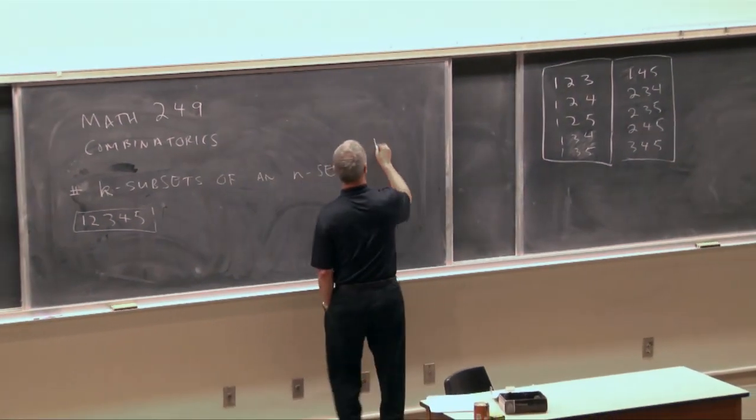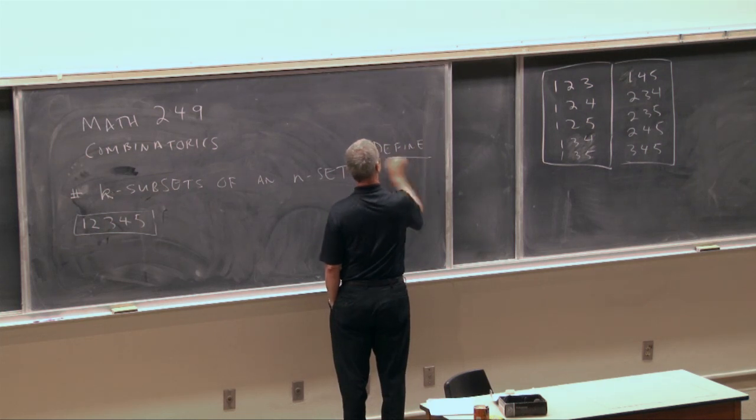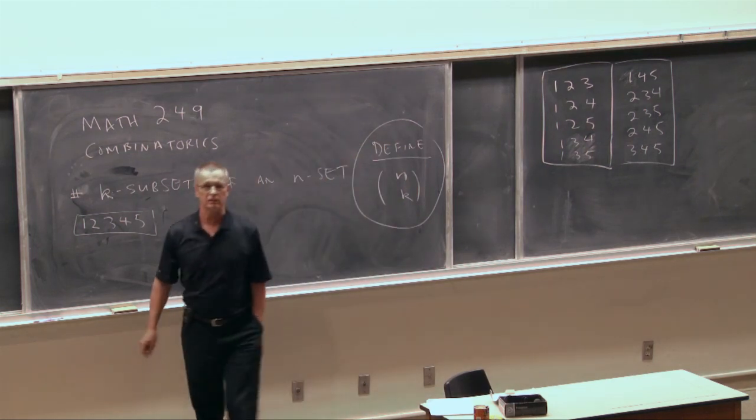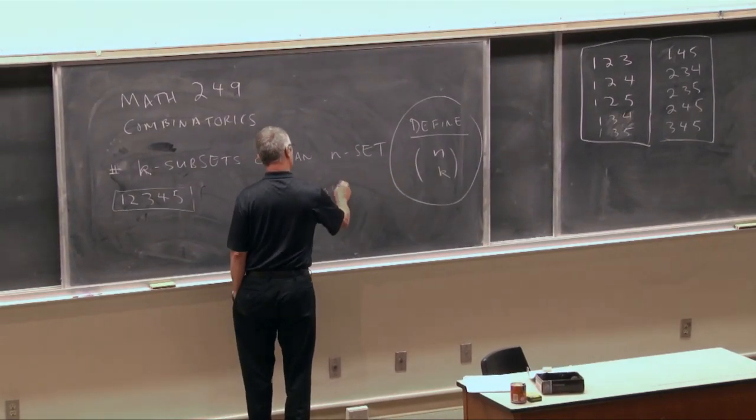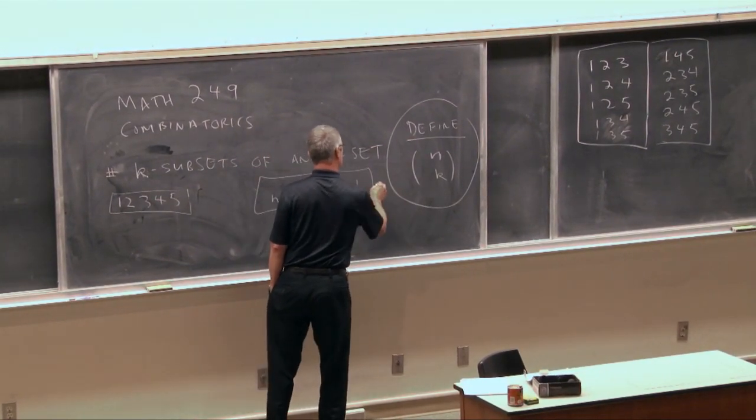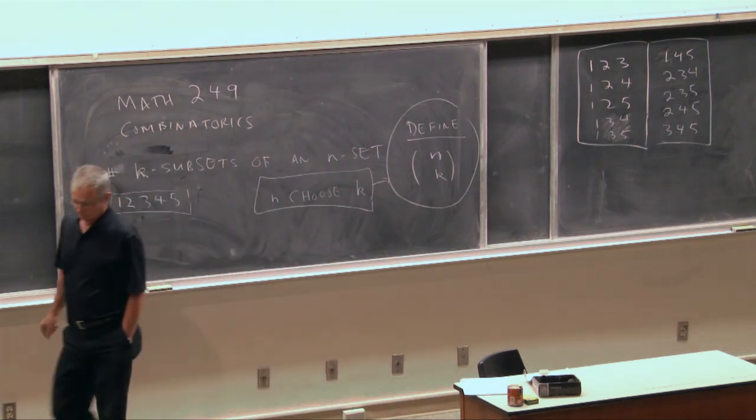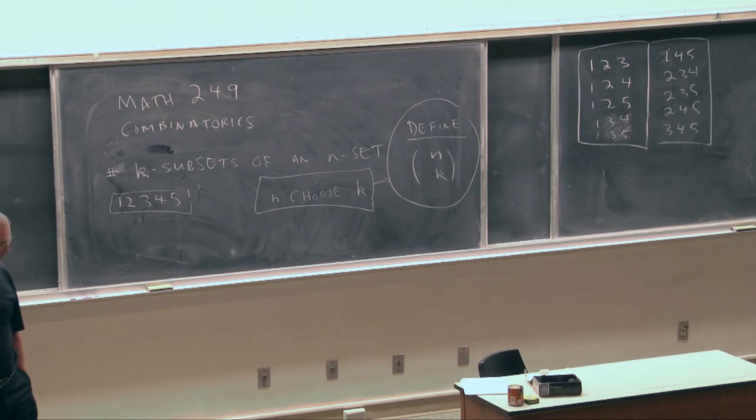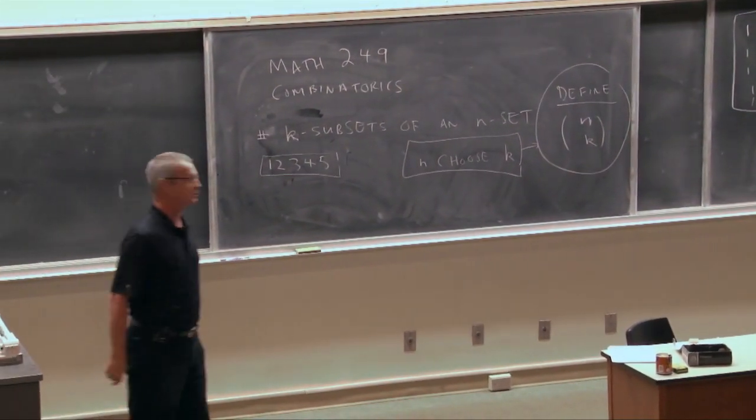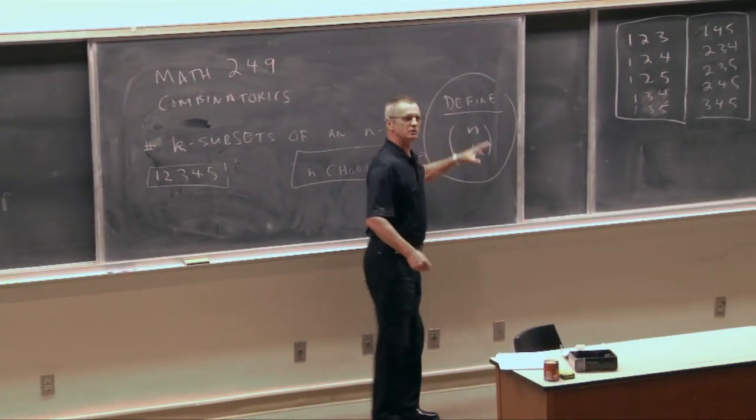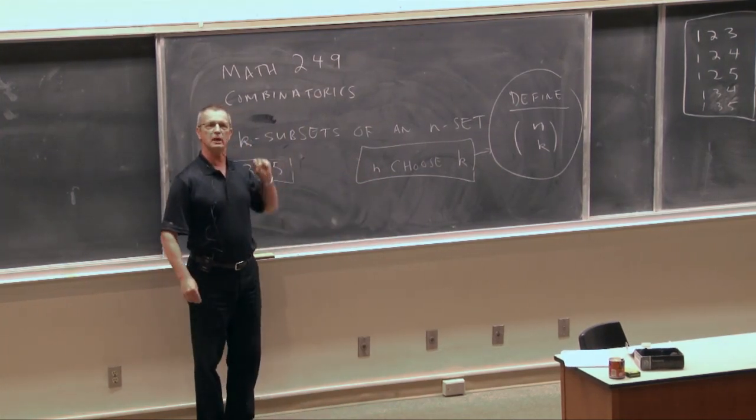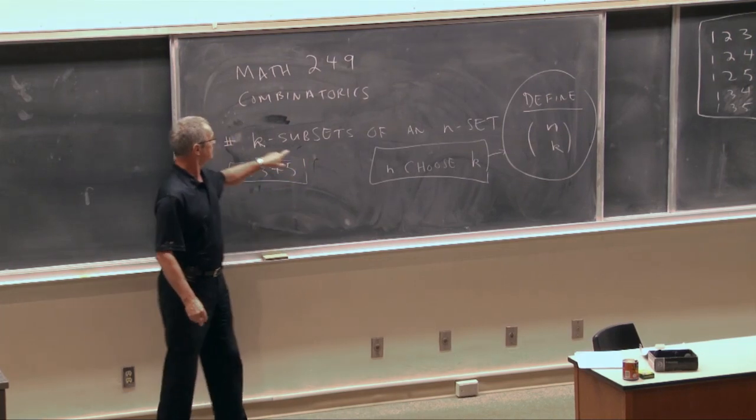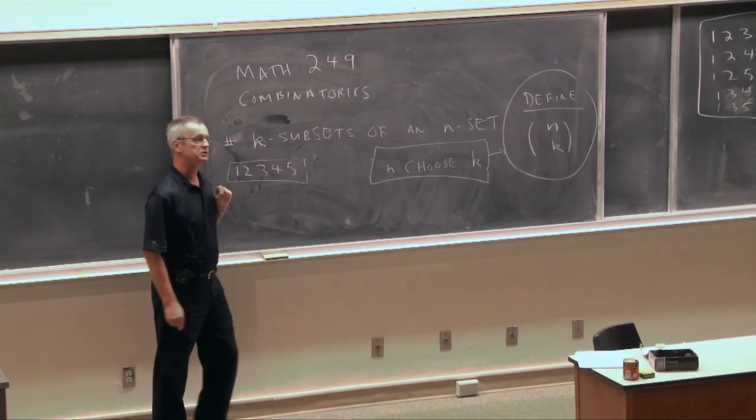We define that to be this symbol, which has 2 parameters, n and k. It's hard to say left parenthesis and right parenthesis and n over k centrally spaced. So we have our own language, n choose k. Of course, it is a mnemonic, a memory aid because it tells us how many ways we will choose k elements from a set of size n.